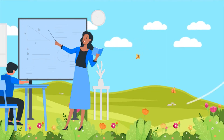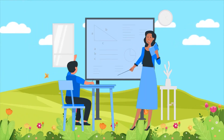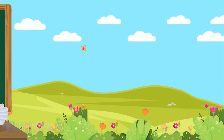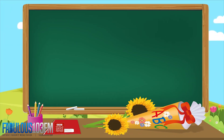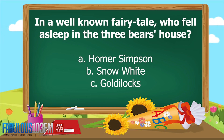Good afternoon kids, we're back again today with the kids quiz! Let's have a look at yesterday's quiz questions and see if you managed to get them right. So the first one was: in a well-known fairy tale, who fell asleep in the three bears' house? Was it A) Homer Simpson, B) Snow White, or C) Goldilocks?